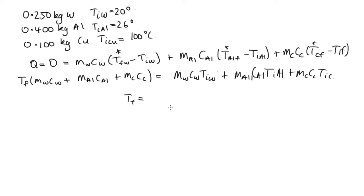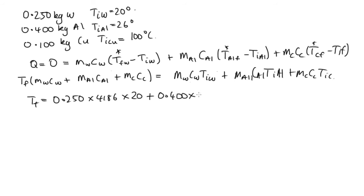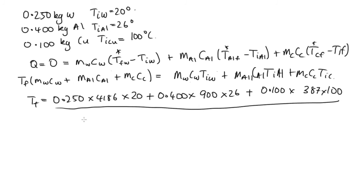We substitute in all our numbers. The final temperature equals: mass of water, 0.250, times 4186, times the initial temperature 20, plus mass of aluminium, 0.400, times heat capacity of aluminium which is 900, times its initial temperature 26, plus mass of copper, 0.100, times heat capacity of copper which is 387, times its initial temperature 100 — all divided by: 0.250 times 4186, plus 0.400 times 900, plus 0.100 times 387.